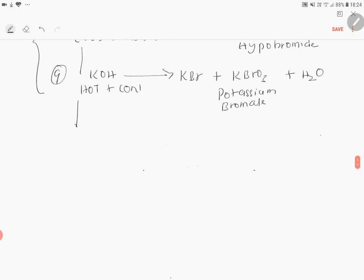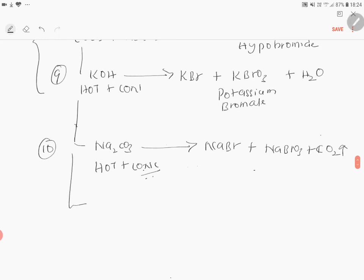Similarly, when bromine reacts with hot and concentrated sodium carbonate, you will be getting sodium bromide plus sodium bromate plus CO2. Sodium bromide and sodium bromate along with CO2.